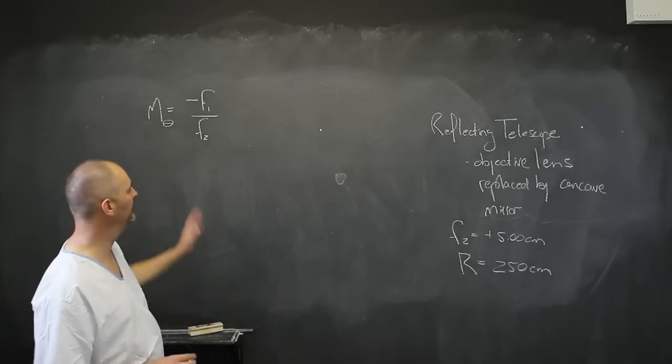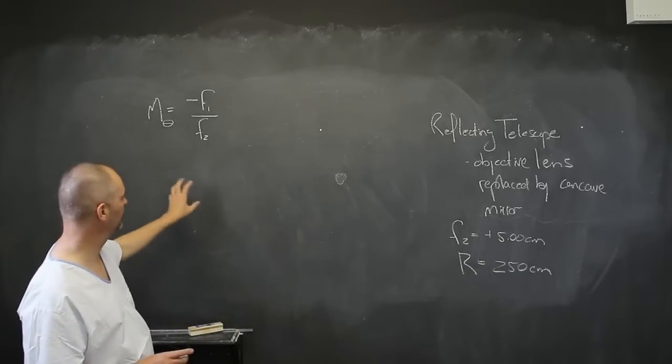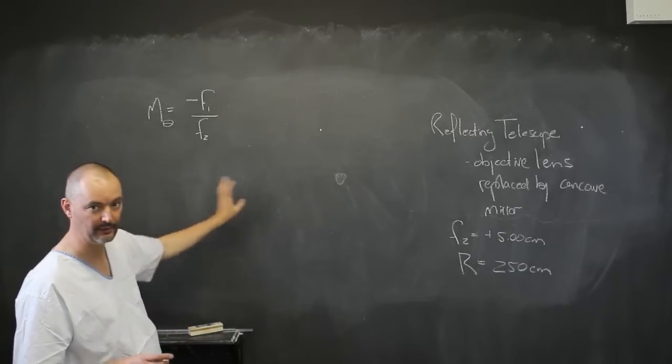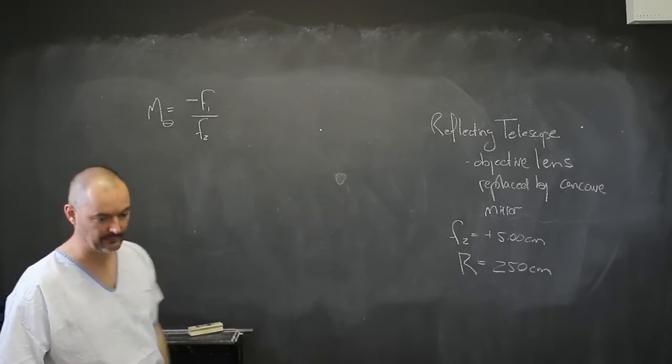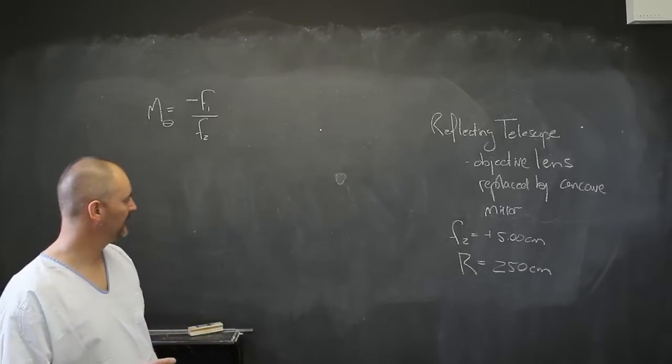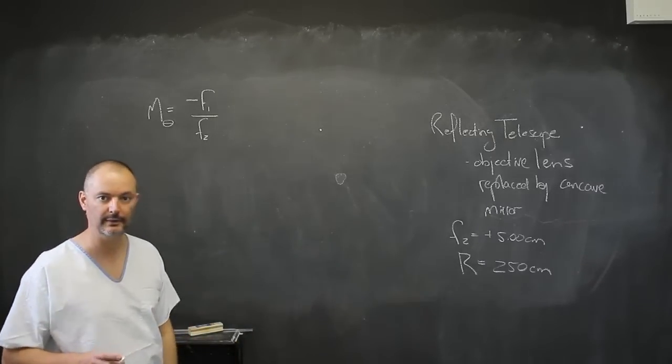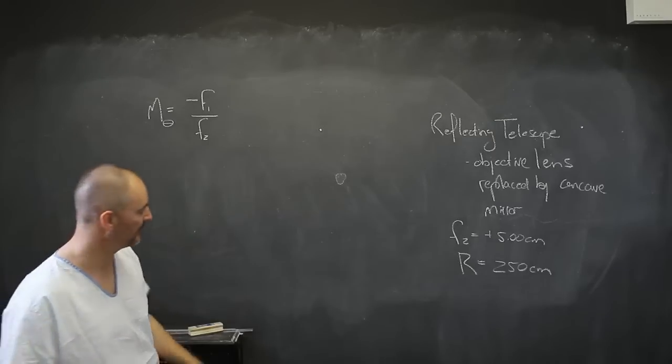Now we do view them as two thin lenses, but in actual fact it is a compound lens system. Both of them. These lenses are not thin lenses. Number two is their surfaces are not spherical, because if they were you would get something called spherical aberration.